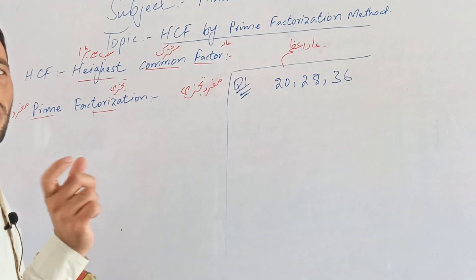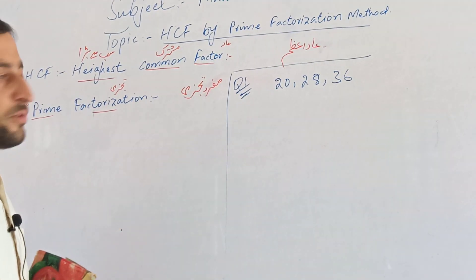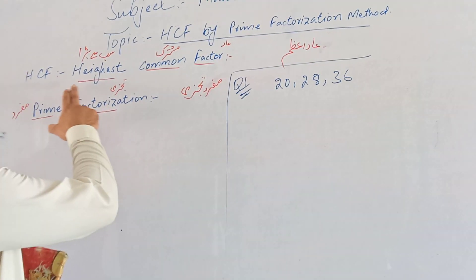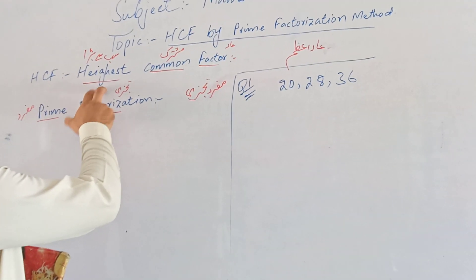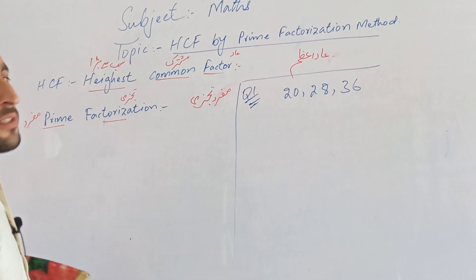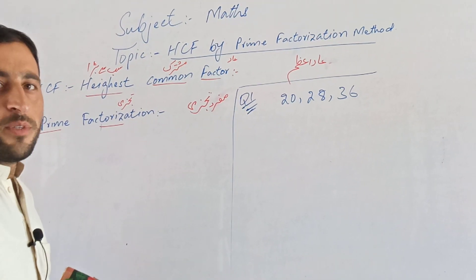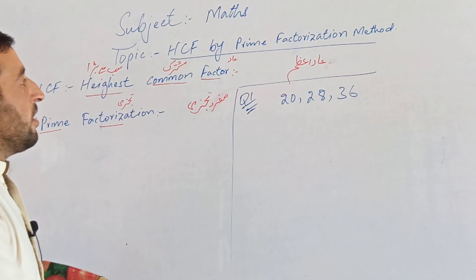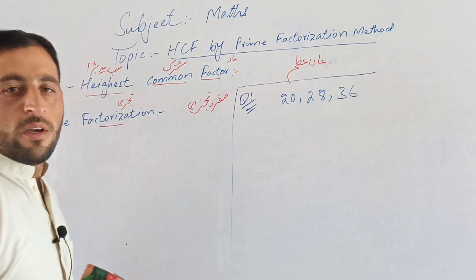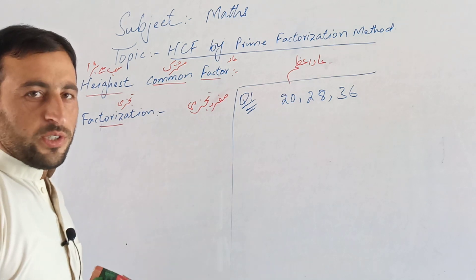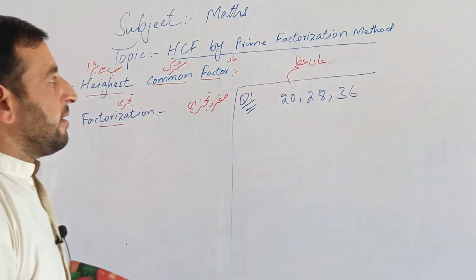The highest common factor means: 'highest' means the biggest, 'common' means the factor is the same across the given numbers.